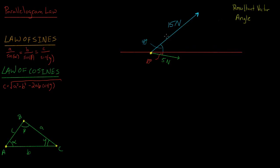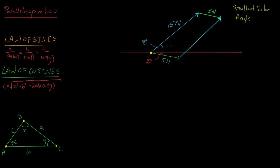To solve this problem, the first thing we want to do is construct a parallelogram. We have 5 newtons down here, but because we're dealing with vectors, we can also have 5 newtons at this point right here. We also know that between these two vectors is the 15 newtons. Vector addition is commutative — it doesn't matter if we add 15 plus 5 or 5 plus 15. The resultant goes from where the two tails meet to where the two heads of these vectors meet.